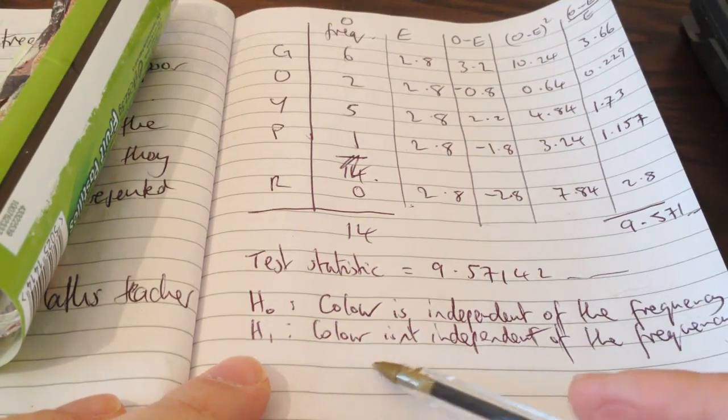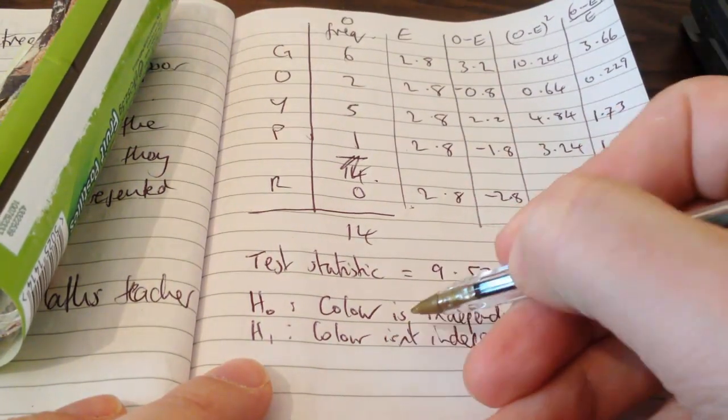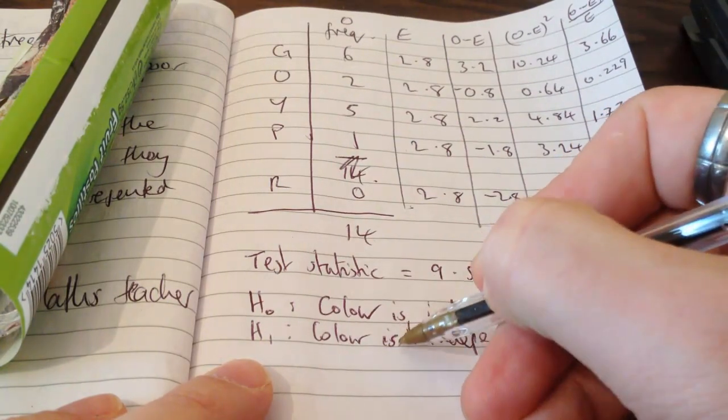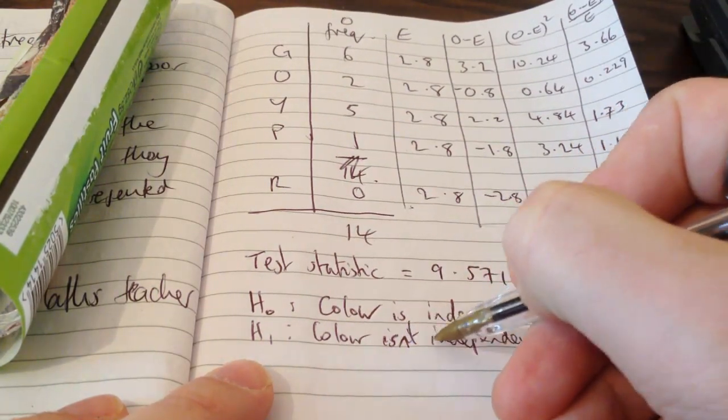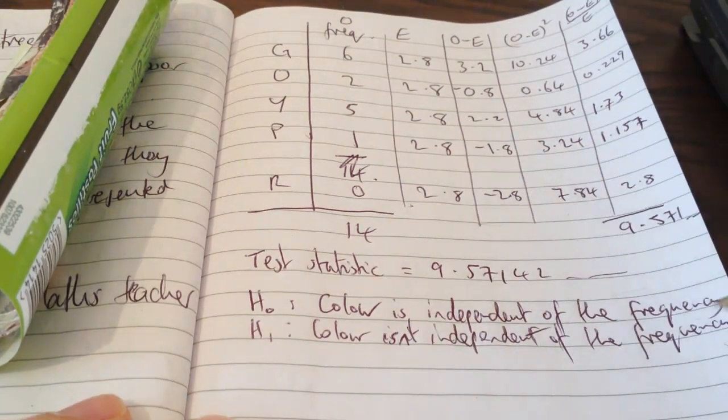H1, my alternate one, is that there is a connection and that there's something. This is unusually distributed. This is an unusual result for a packet of sweets if they're supposed to be equally distributed.